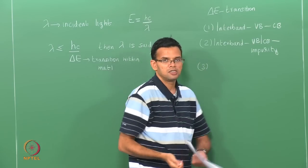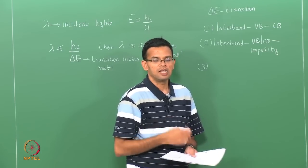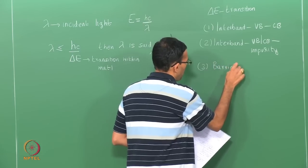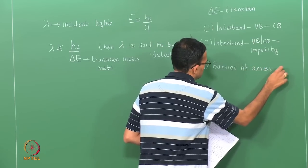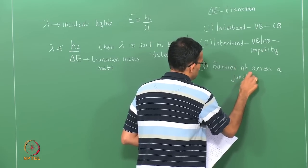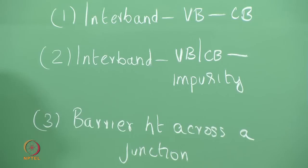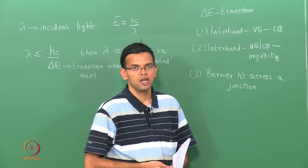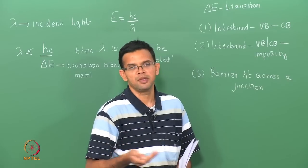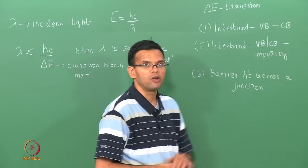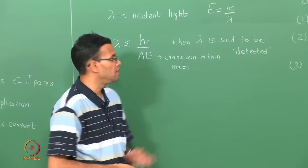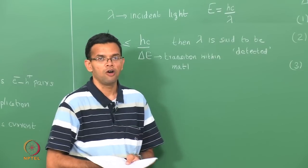If you have junctions, you have barriers at the junction, so your transition could be across a barrier corresponding to a barrier height across a junction. For example, later we will look at Schottky diode based photo detectors, where the light can have sufficient energy to excite electrons from the metal to the semiconductor, overcoming the Schottky barrier. So ΔE depends on a variety of transitions, and this defines the wavelength range of your photo detector.